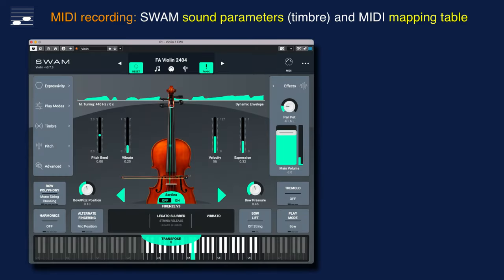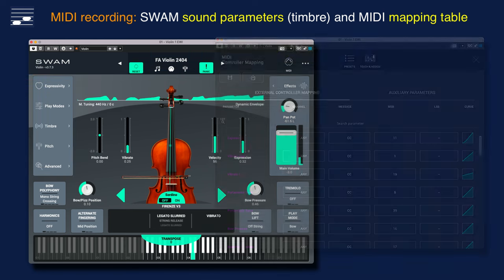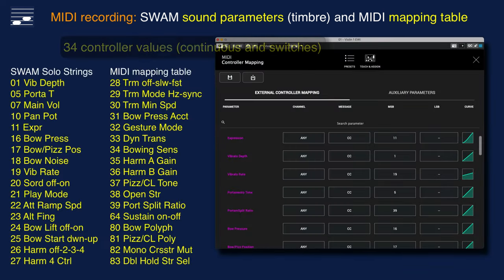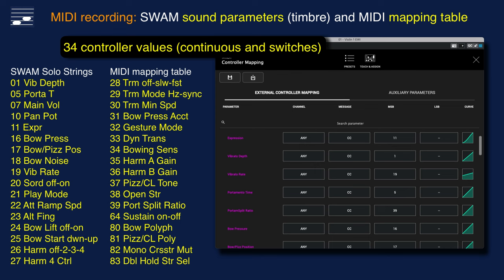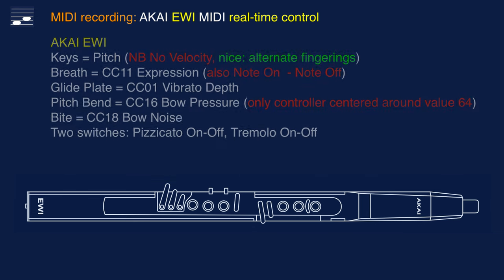I fine-tuned the SWAM sound parameter settings, stored these as a preset, and implemented the MIDI mapping table with a total set of 34 controllers. The Akai EWI has a limited set of controllers and I find the technology quite outdated, as I've stated before. But I've invested significant time practicing this instrument and its alternate fingering options.